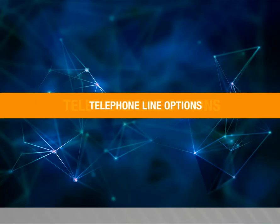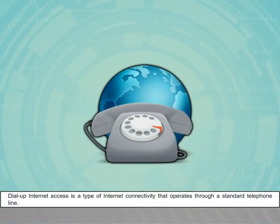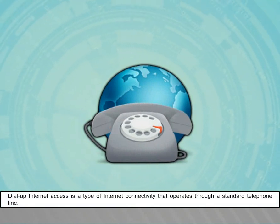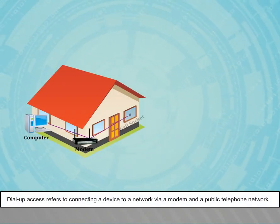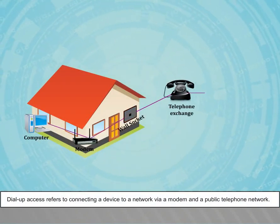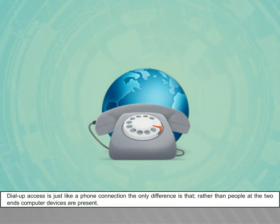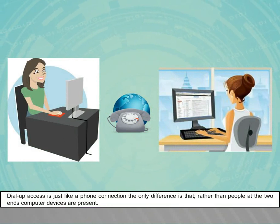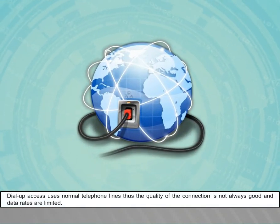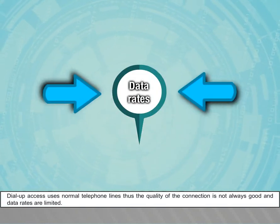Telephone line options: Dial-up internet access is a type of internet connectivity that operates through a standard telephone line. Dial-up access refers to connecting a device to a network via a modem and a public telephone network. It is just like a phone connection — the only difference is that rather than people at the two ends, computer devices are present. Dial-up access uses normal phone lines, so the quality of the connection is not always good and data rates are limited.